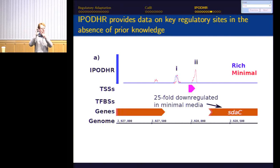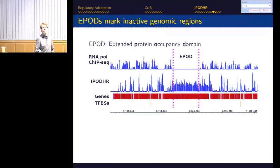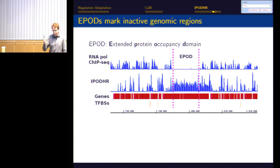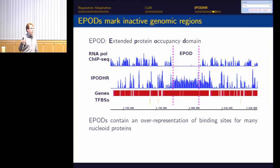Zooming out, you also see interesting features at larger scales. We observe what we call EPODs — Extended Protein Occupancy Domains. Whereas most of the iPod-HR signal is concentrated at transcription factor binding sites, some genomic regions show a wall of occupancy alongside RNA polymerase occupancy driven below background levels — densely occupied, transcriptionally silent regions. They also show over-representation of binding sites for several nucleoid proteins. EPODs range from about 2 kb to 10–22 kb and appear to play regulatory roles in silencing genes, as well as architectural roles as organizing centers for nucleoid protein occupancy.